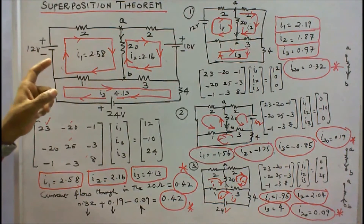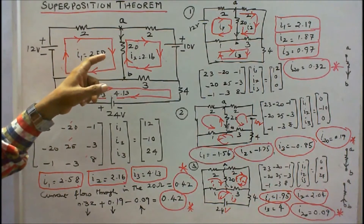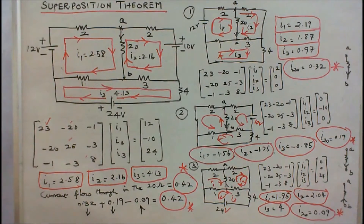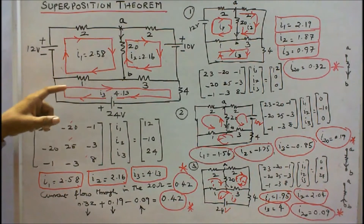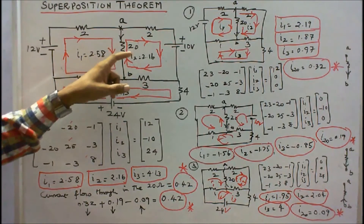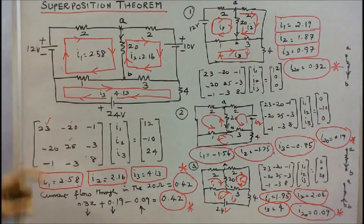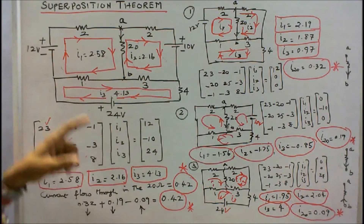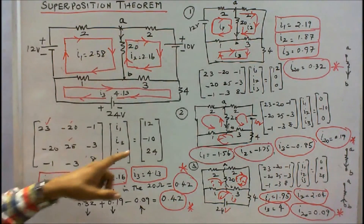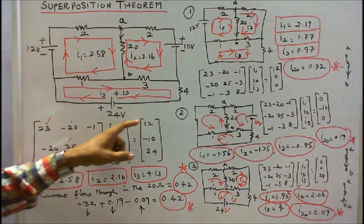The element common to loops 1 and 2 is 20 ohm; since the current directions are opposite, this gives −20. The element common to loops 1 and 3 is 1 ohm; the direction is opposite, giving −1. The element common to loops 2 and 3 is 3 ohm, giving −3. The current column is I1, I2, I3. The voltage column is 12V for loop 1. For loop 2, the current goes from positive to negative through the 10V source, so it is −10V. For loop 3, it is +24V. The right-hand side vector is therefore [12, −10, 24].